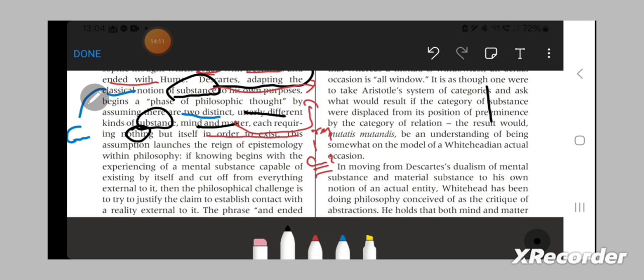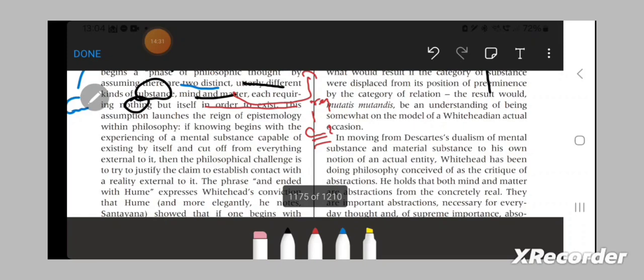This assumption launches the reign of epistemology. If knowing begins with the experiencing of a mental substance capable of existing by itself and cut off from everything external to it, then the philosophical challenge is to justify the claim to establish contact with the reality external to it.